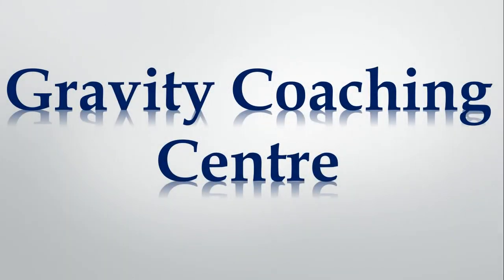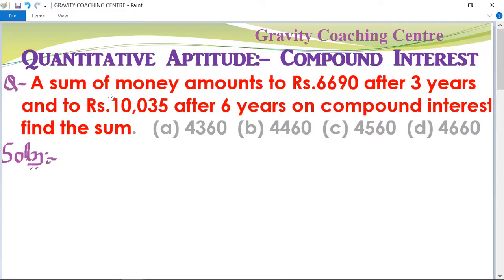Welcome to our channel Gravity Coaching Centre. Quantitative Aptitude chapter: Compound Interest. Question: A sum of money amounts to rupees 6690 after 3 years and to rupees 10,035 after 6 years on compound interest. Find the sum.